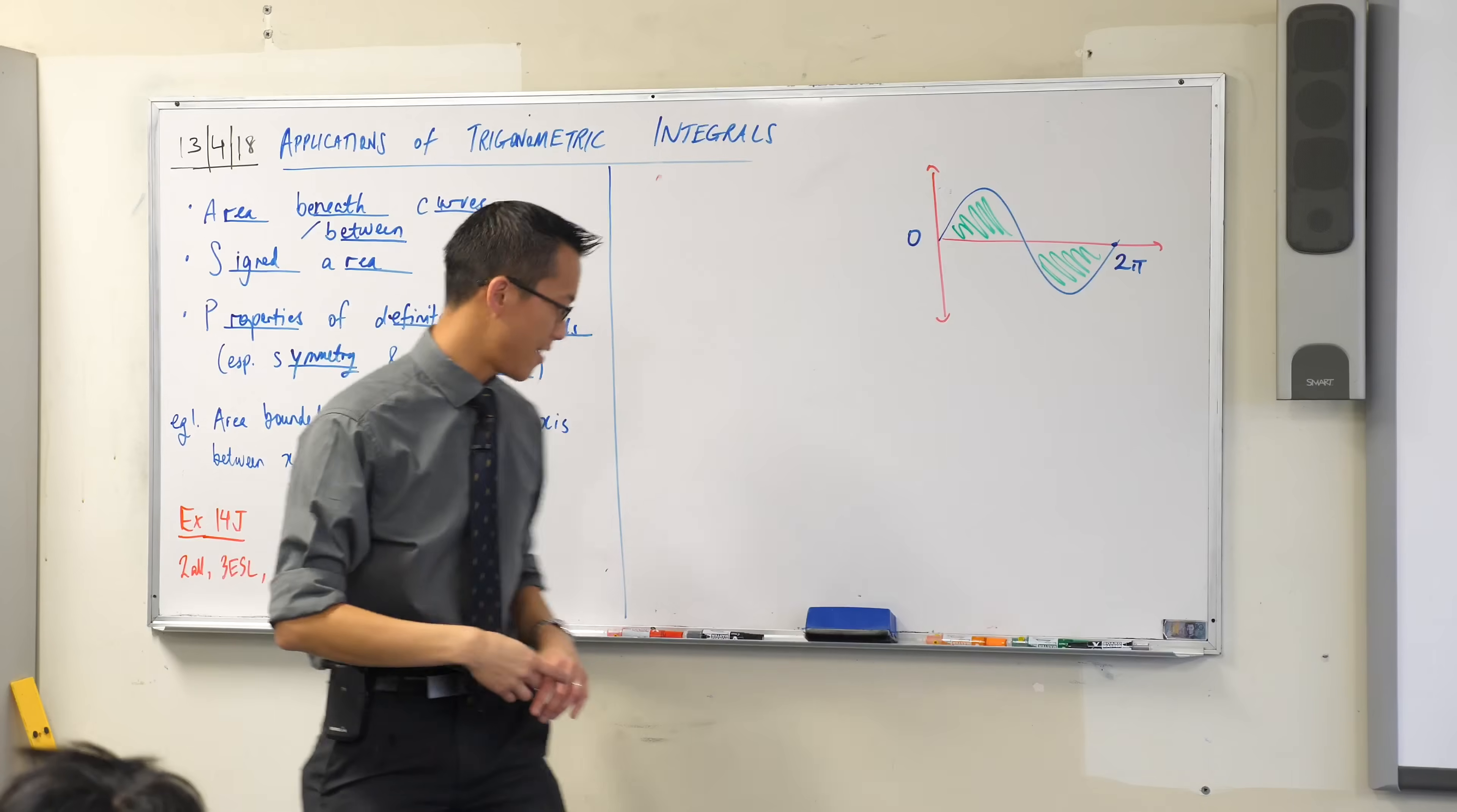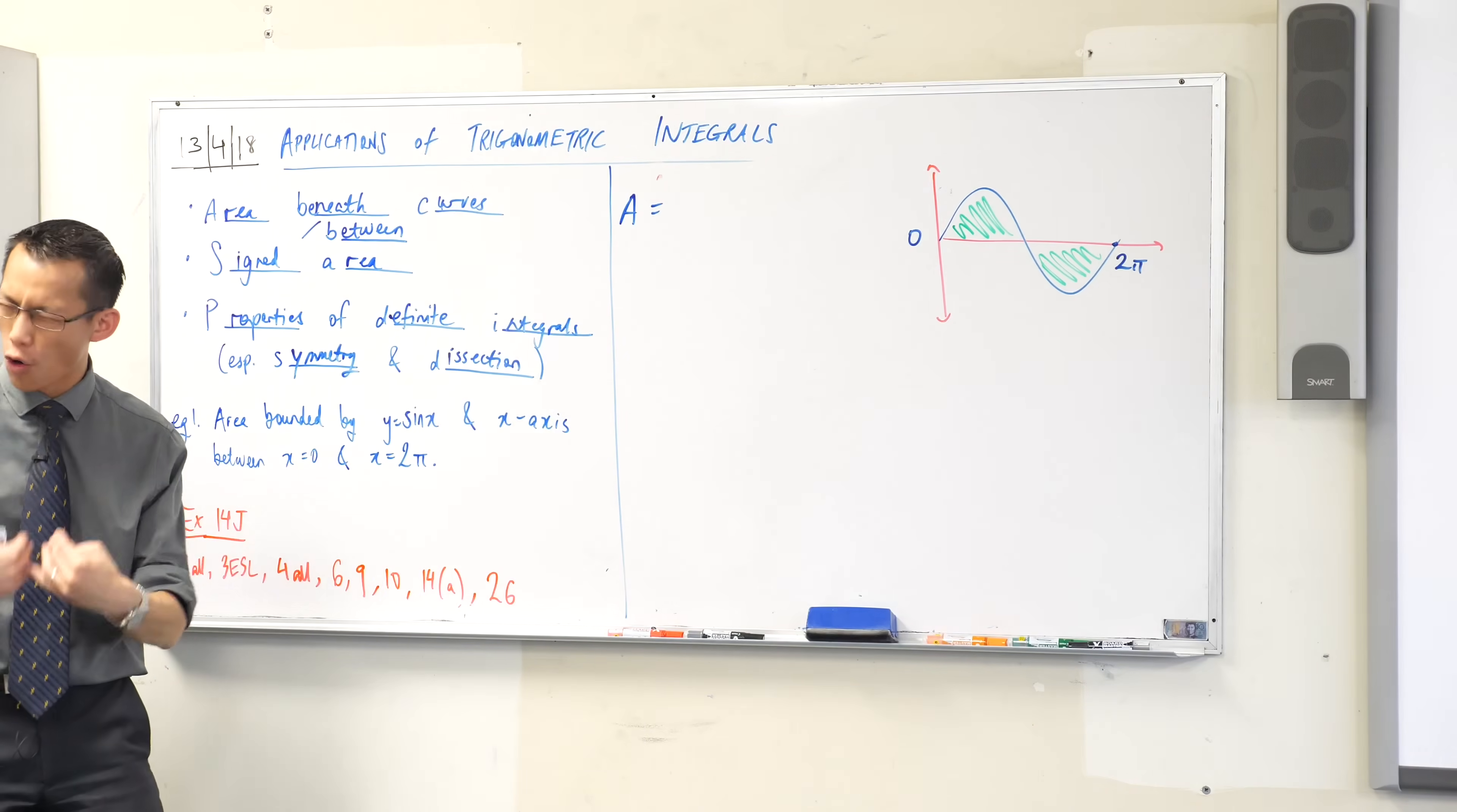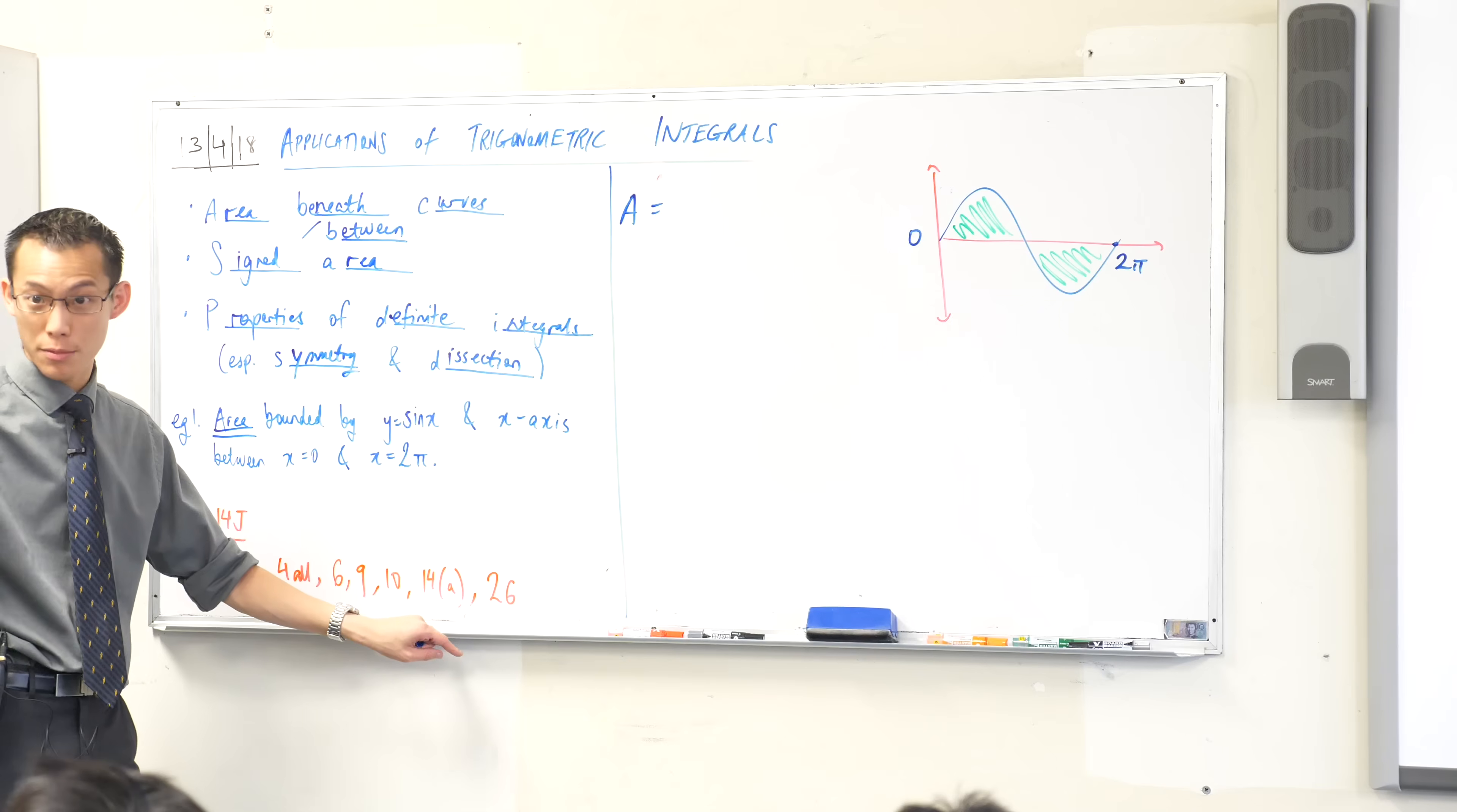So how are we going to set out our answer? Well, the first thing I'm going to do is say to work out this area, I need to form the right integrals. So remember, the question does not say integrate, we're going to form integrals ourselves. It's an area, so am I thinking about signed area, positive and negative, or am I just thinking of things in terms of positives? It's just in terms of positives, right?